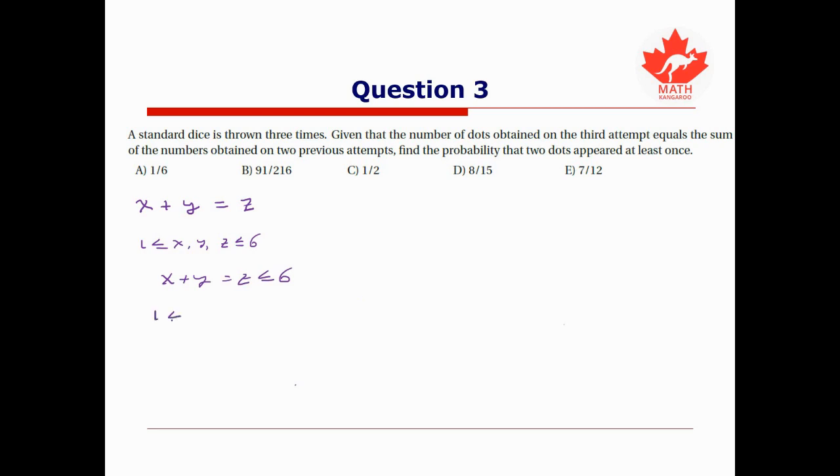So we really only want to consider the case when X plus Y being Z is less than or equal to six. Since we know that Y is at least one, this means that for any choice of X, X plus Y is going to be at least X plus one, and it's going to be at most six. So subtracting X from everywhere, we get that Y is between one and six minus X for any possible choice of X. So we just need to add up all these cases for each choice of X. There's going to be six minus X choices for Y.